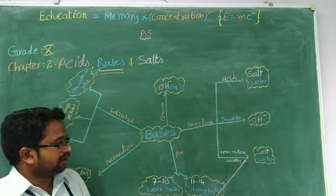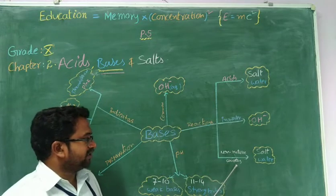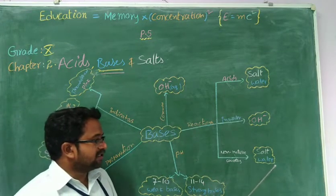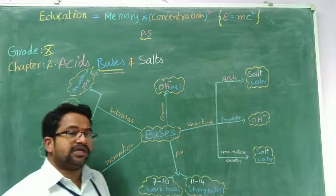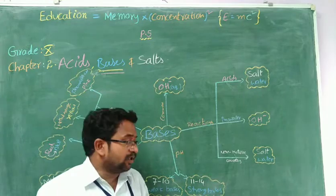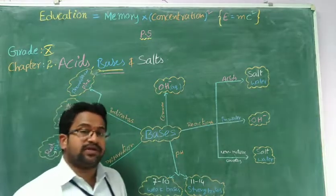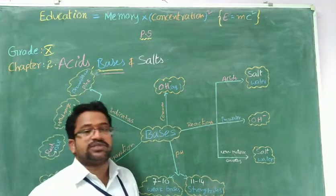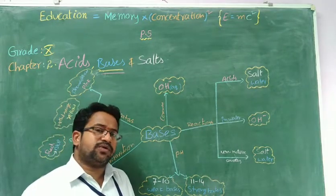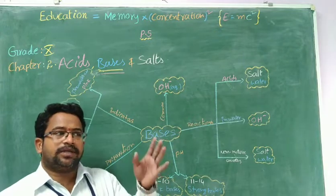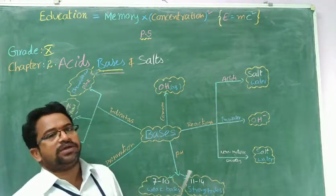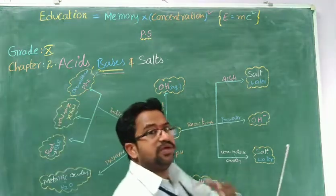One common example: the non-metallic oxide is carbon dioxide, and the base is calcium hydroxide. The salt formed is calcium carbonate — what you call marble. CaO is quicklime, and CaCO3 is limestone. Common names are also there, so don't forget to prepare a chart with serial number, chemical name, common name, and formula. Like that you have to prepare one chart. Then it is very easy to analyze.